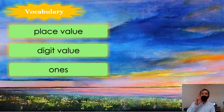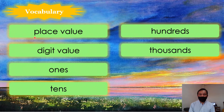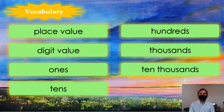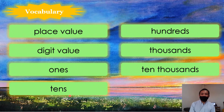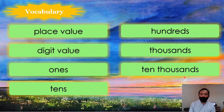Let's read our vocabulary two times. Number one: place value, place value. Digit value, digit value. Ones, ones. Tens, tens. Hundreds, hundreds. Thousands, thousands. Tens thousands, tens thousands.